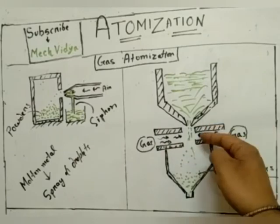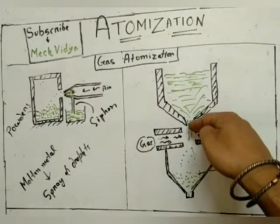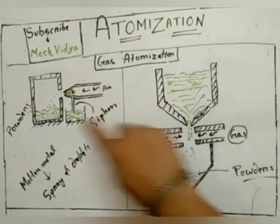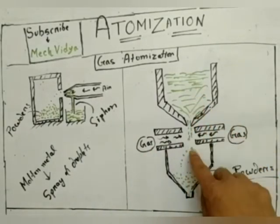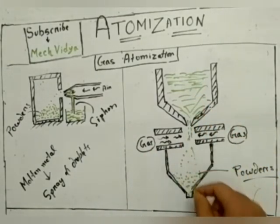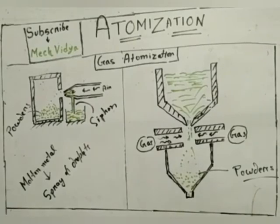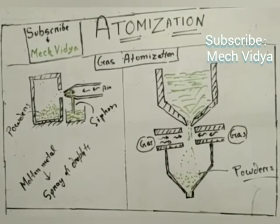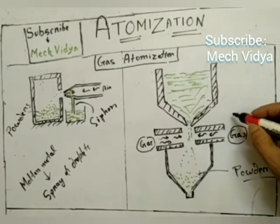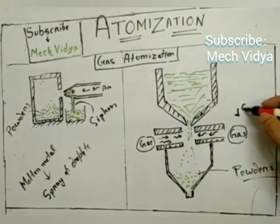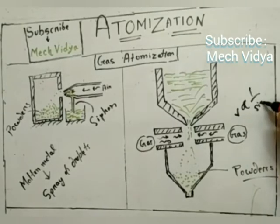When these gases come and strike this flowing metal, like what we have seen here, this flowing jet of molten metal will get converted into small droplets. Now here one thing we have to take care of is that the velocity of this jet is inversely proportional to the size of the particles.